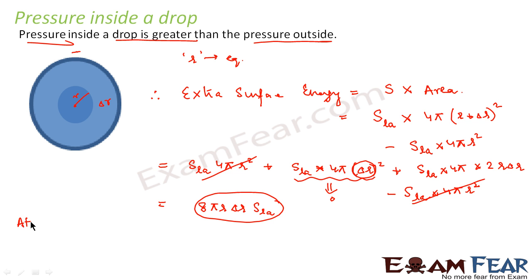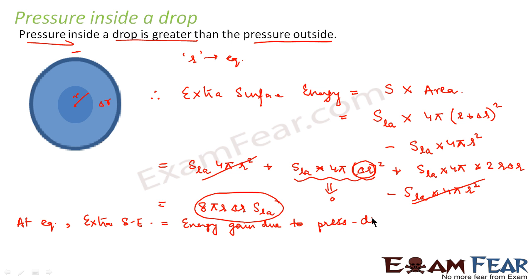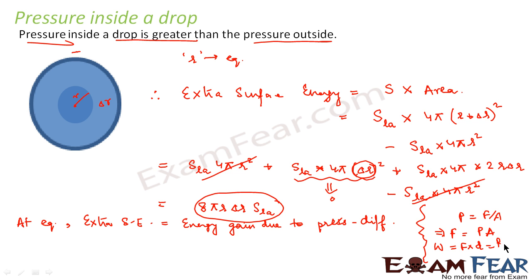At equilibrium, this extra surface energy must equal the energy gained due to the pressure difference. Since pressure inside and outside are different, there is an associated energy. We know pressure equals force per unit area, so force equals pressure times area. Energy change, or work done, equals force times displacement, which is pressure times area times displacement.